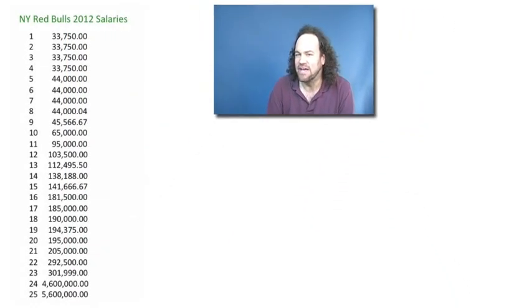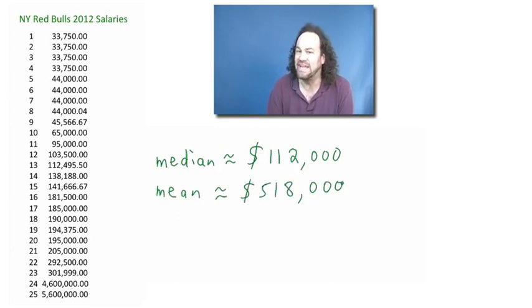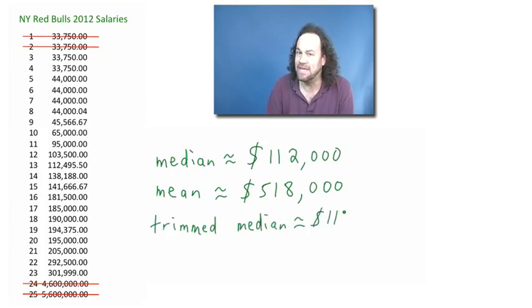We'll be working more with these different measures of spread as we go along. For now let's consider one last example. Let's consider again those salaries of the soccer players on the 2012 New York Red Bulls soccer team. We already computed that the median of these salaries is about $112,000 and the mean is about $518,000 which is a lot higher. We also considered trimming the data and said that if we eliminated the two highest and the two lowest salaries, then the median would stay exactly the same but the mean would be a lot less, now just about $128,000.